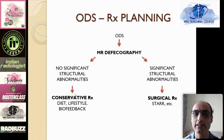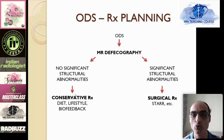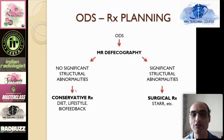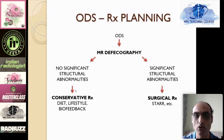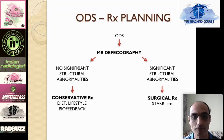Biofeedback therapy is typically done by the gastroenterologist or electrophysiologist using a rectal balloon and an anal manometer. They retrain the patients to contract and relax the pelvic floor muscles properly to ensure proper defecation. Many of these patients have pelvic dyssynergia, where muscles that are supposed to relax during defecation — like the puborectalis or the external sphincter — paradoxically contract, causing the obstruction.